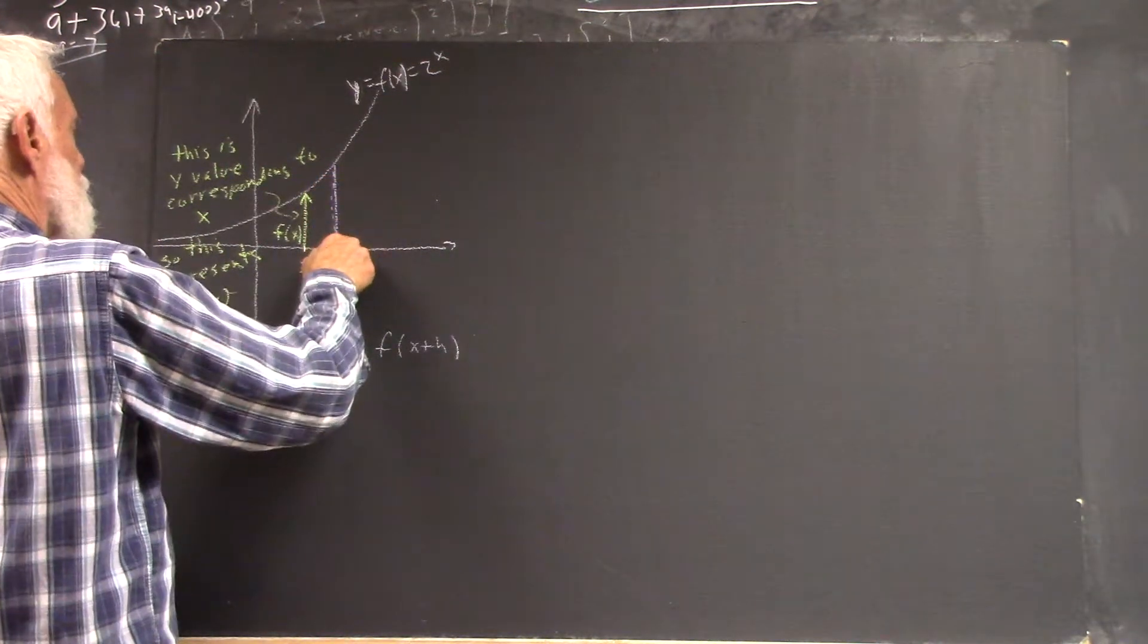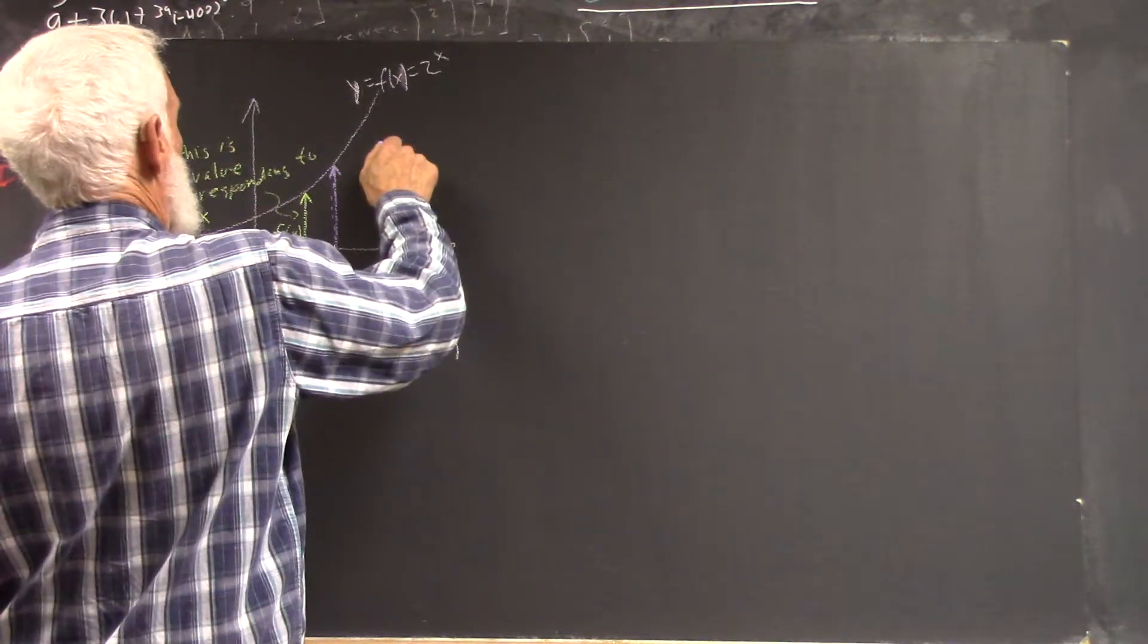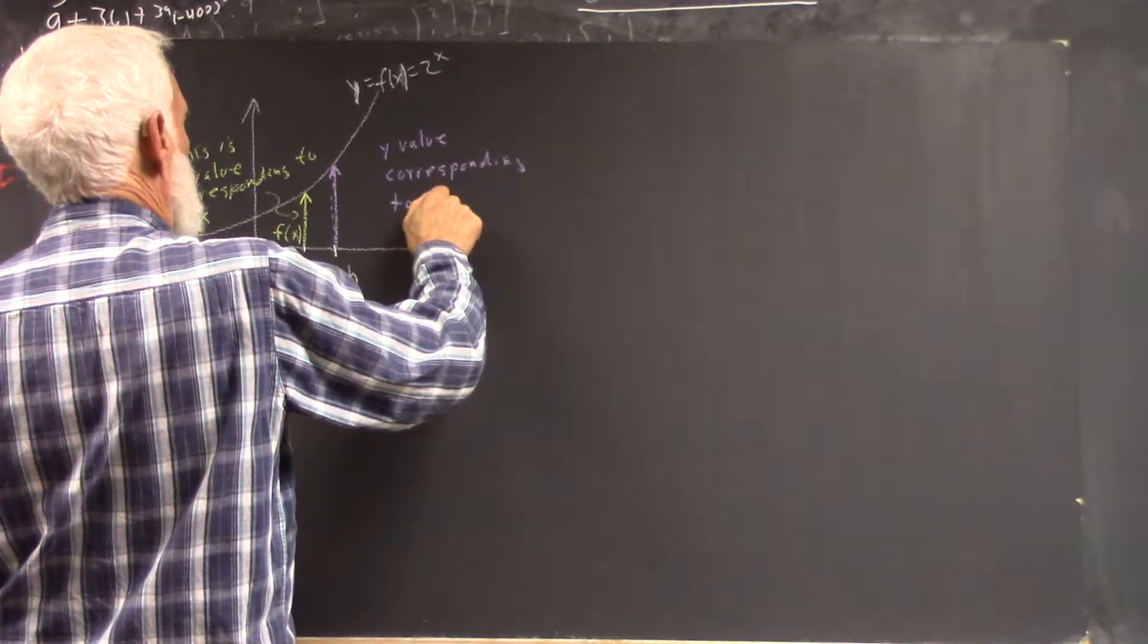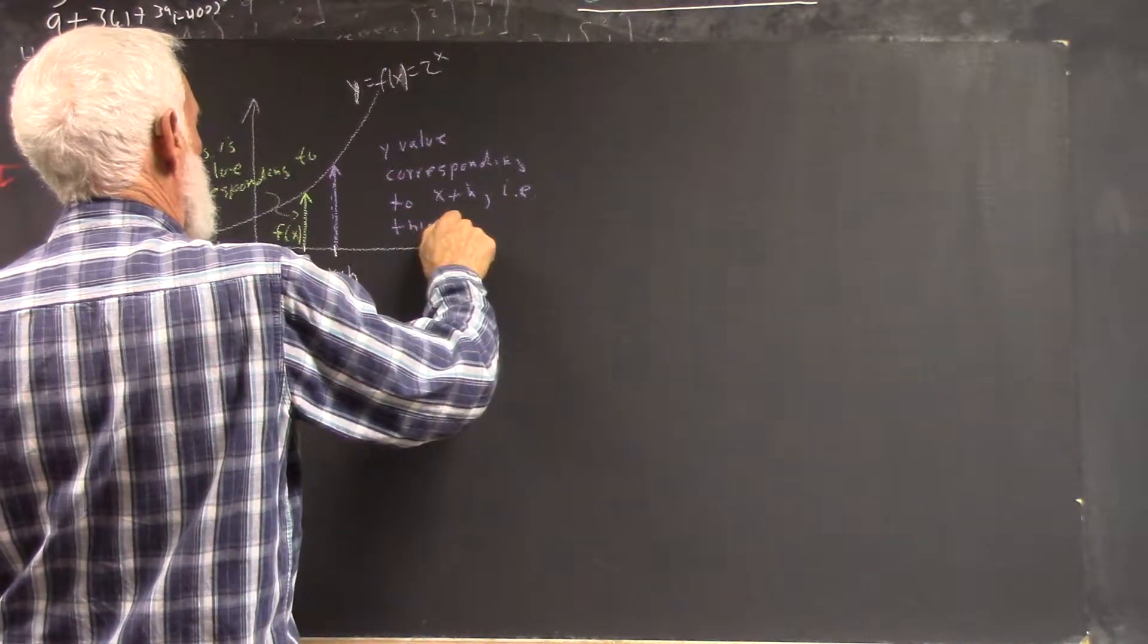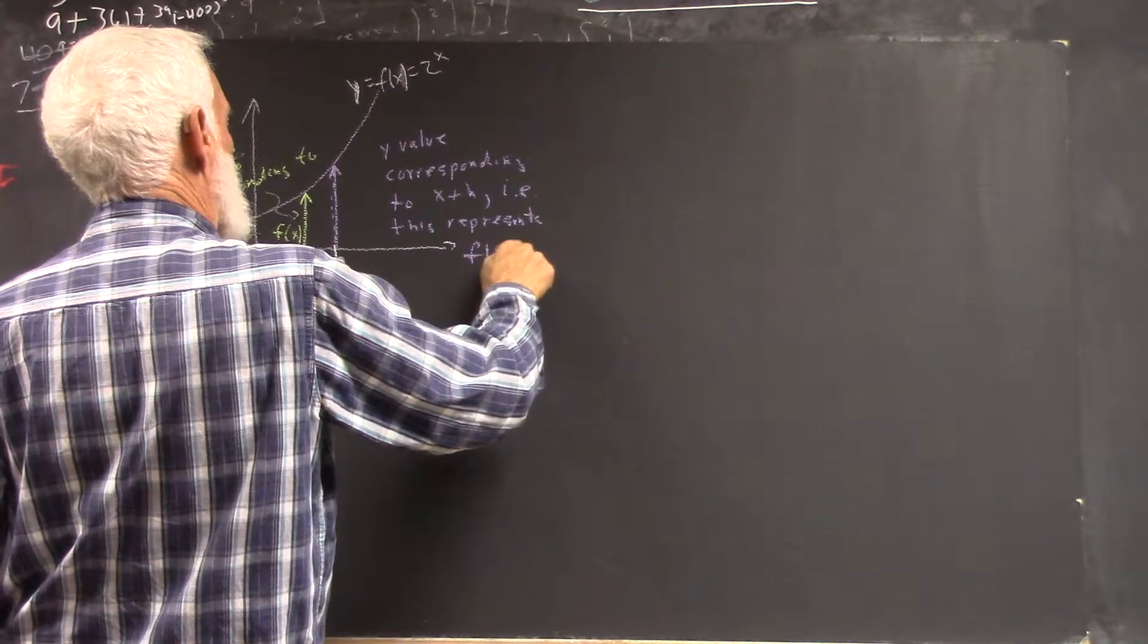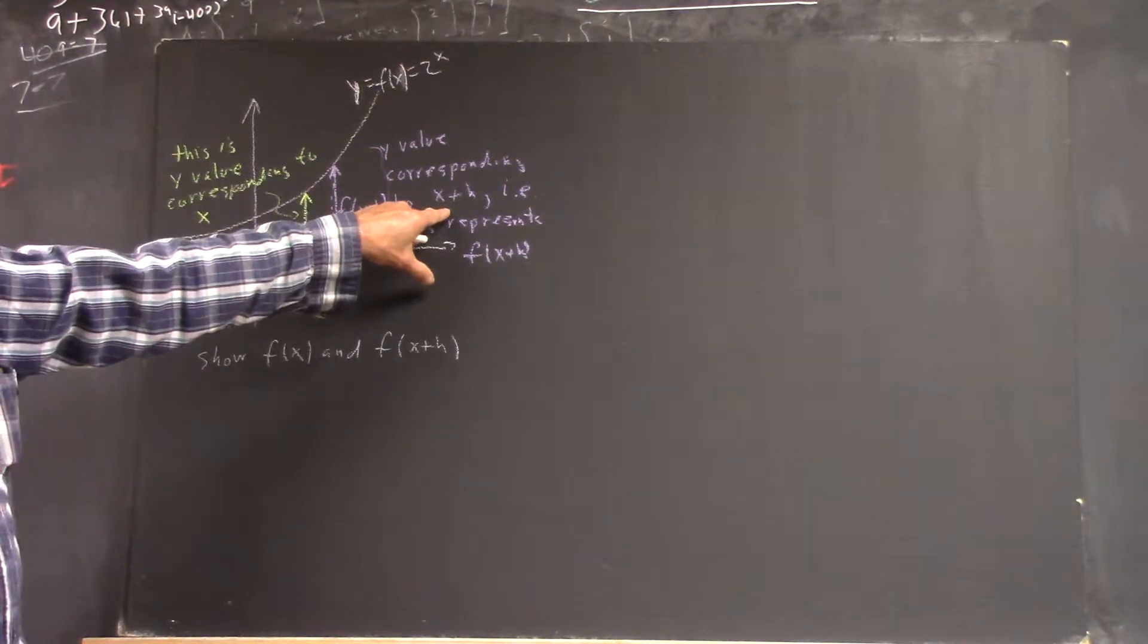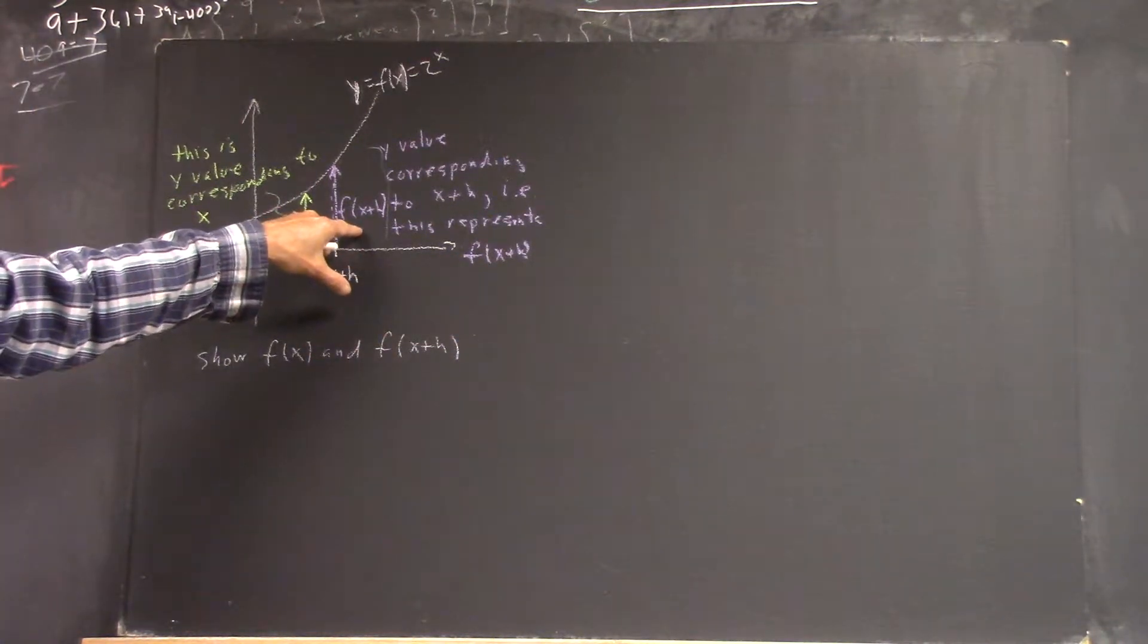And then, what's this represent? Well, this represents... So I'm going to label this, this y value corresponding to x plus h, that is, this represents f of x plus h. I'm going to label that f of x plus h.